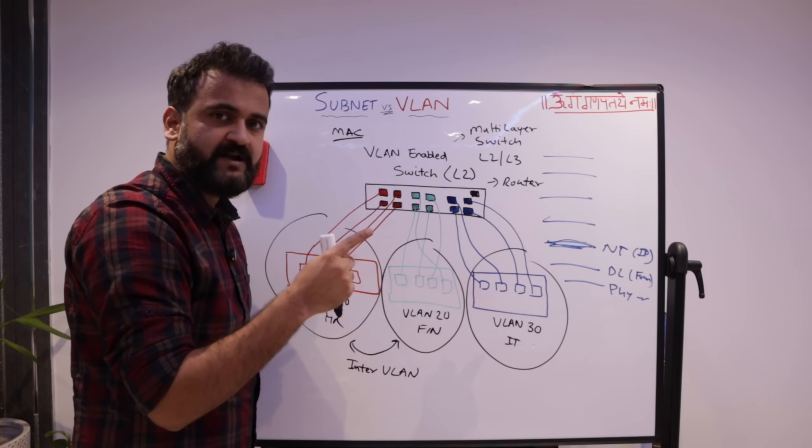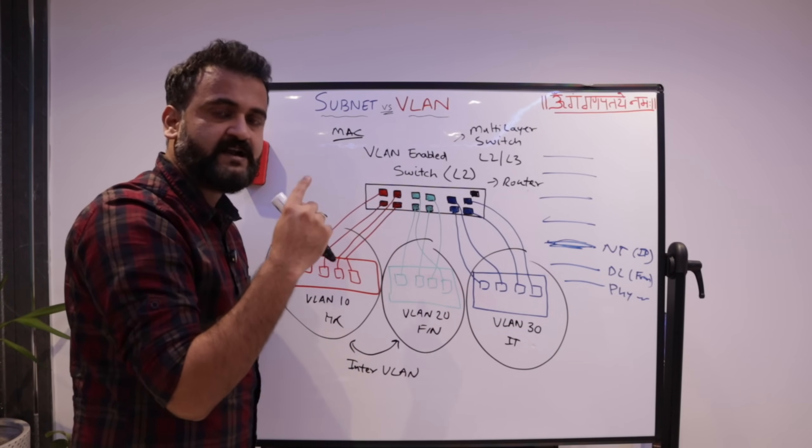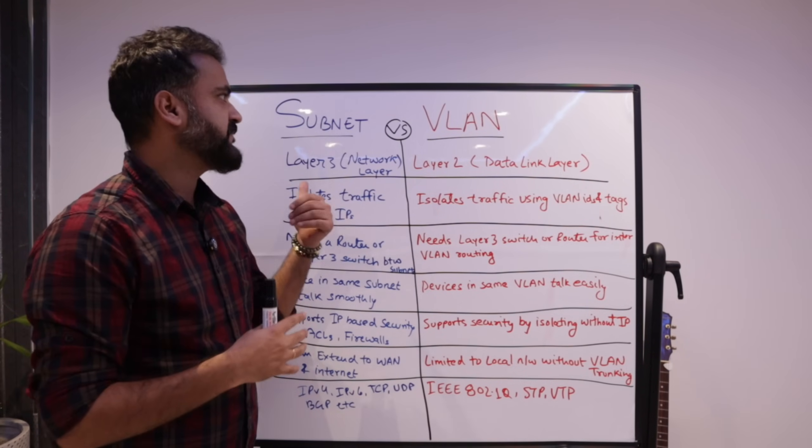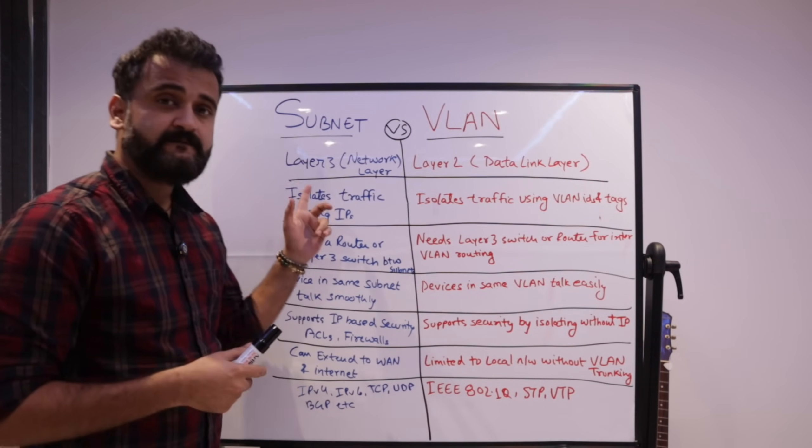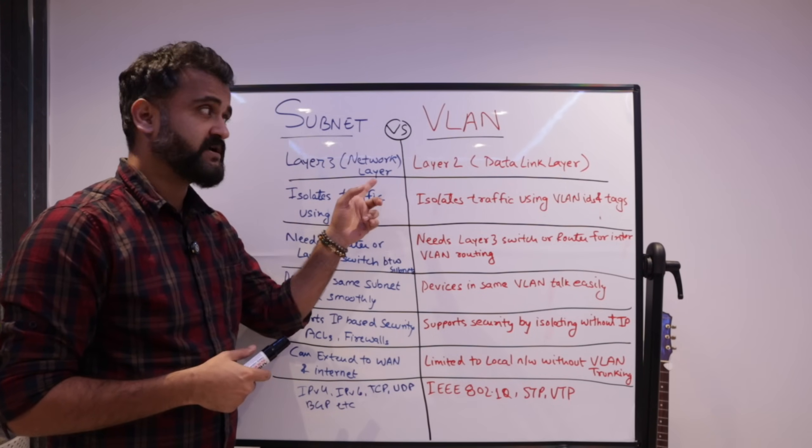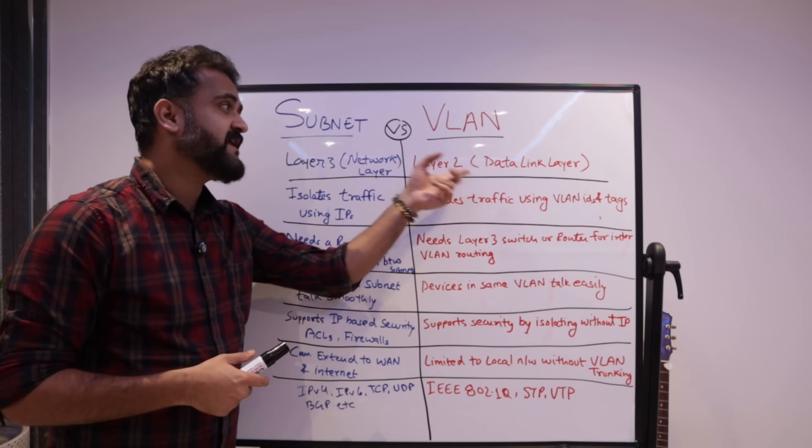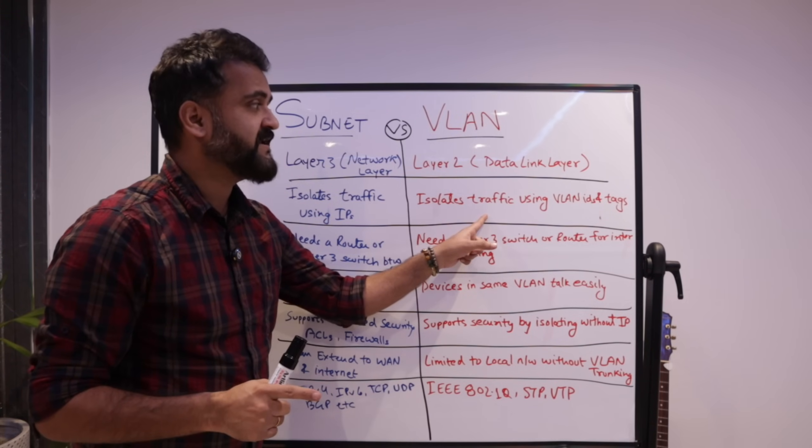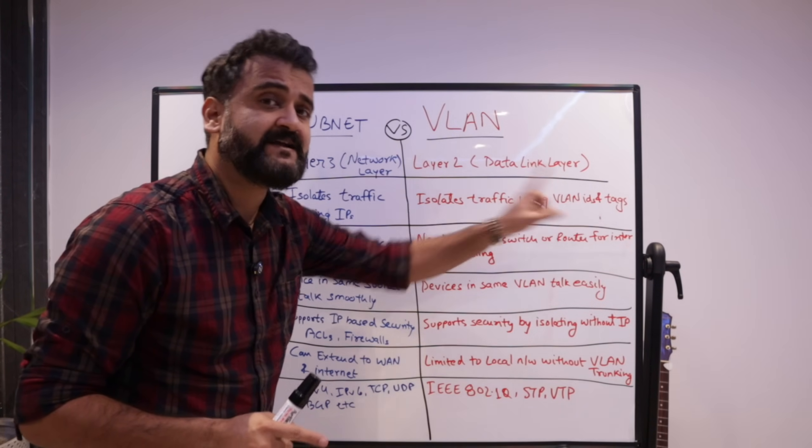So now let's quickly summarize the difference between VLAN and subnetting with a left and right comparison. So friends, let's quickly summarize the key differences between subnet and VLAN. Number one, we have already talked about it. Subnet works at layer three, network layer, whereas VLAN works at layer two data link layer. Subnet isolates traffic using IP addresses, whereas VLAN does it using VLAN IDs and tags.